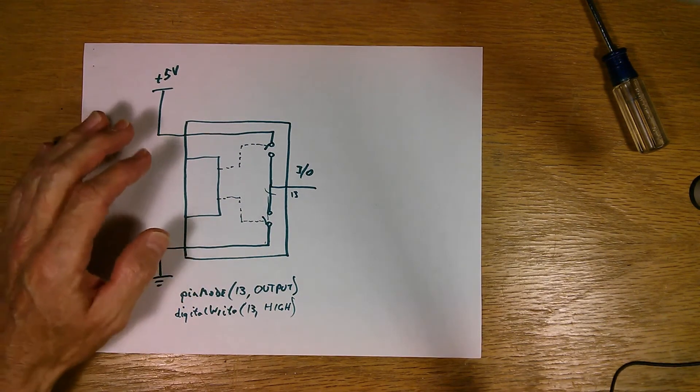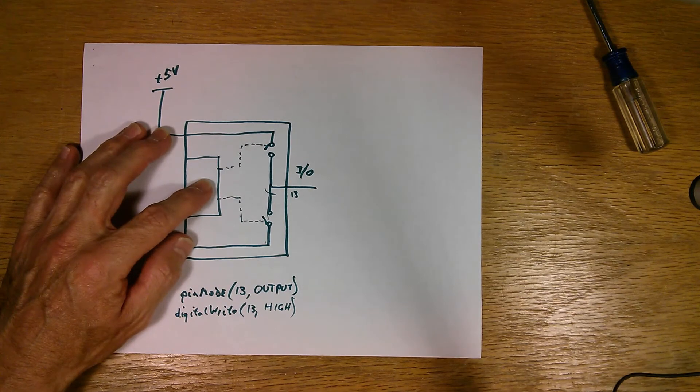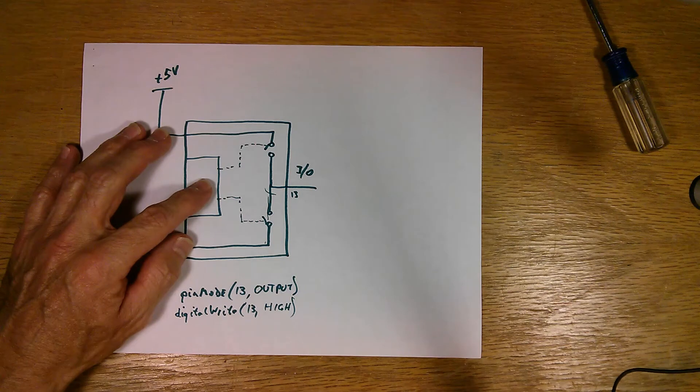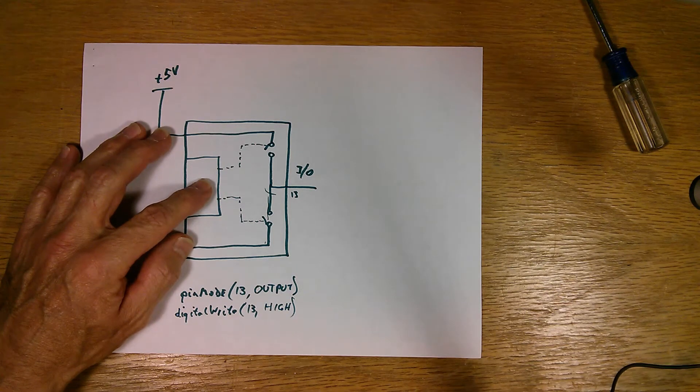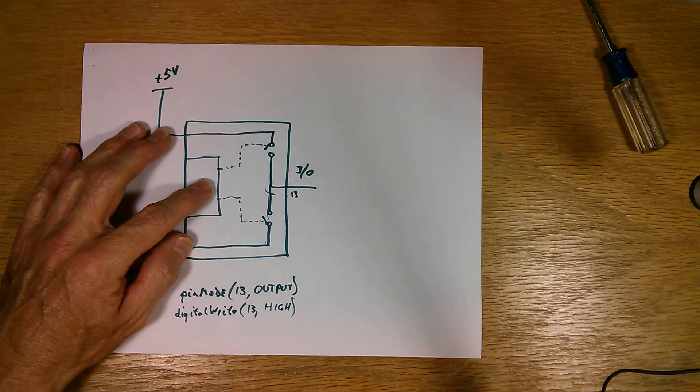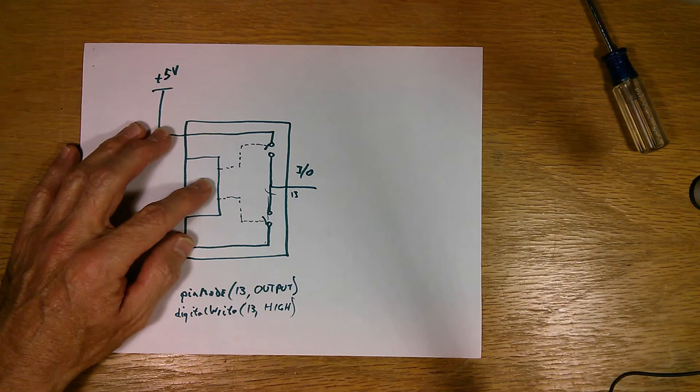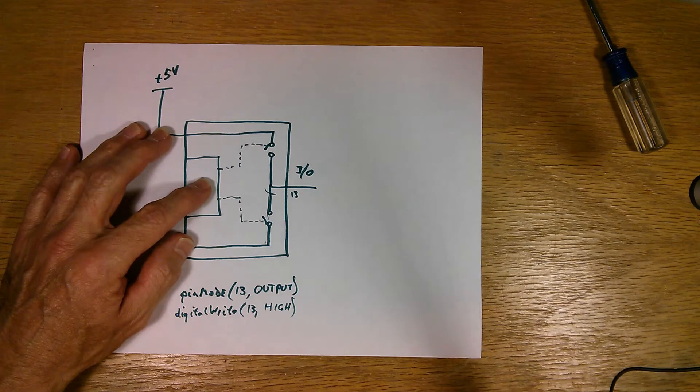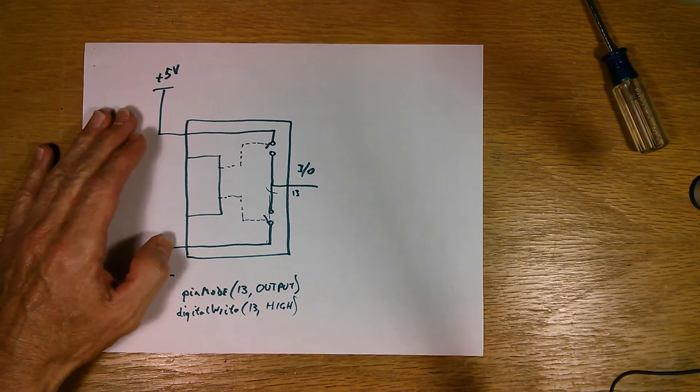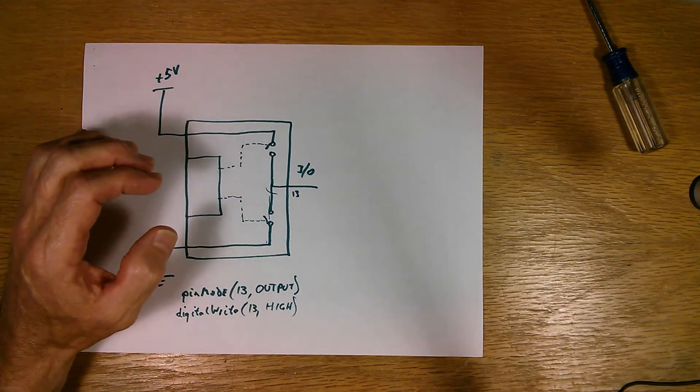If you were to dig out the spec sheet for the microcontroller on the Arduino, it's the ATmega devices, and you dug through the data sheet, which is actually more like a book, it's some 200 or 300 pages long. But it tells you everything you need to know about the microcontroller and everything that it can do.